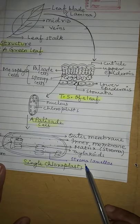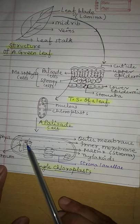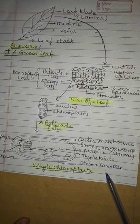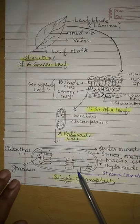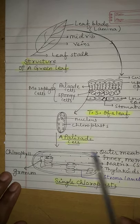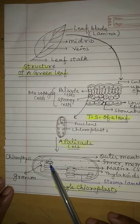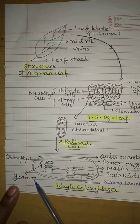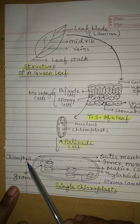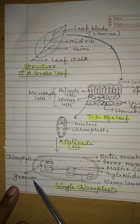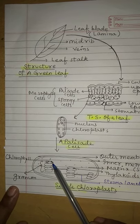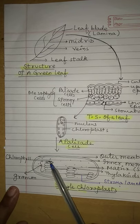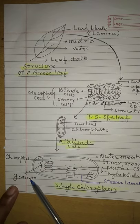Chloroplast was discussed because it is the cell organelle in which chlorophyll pigment is found. The chlorophyll pigment is found specifically in the thylakoids or grana. If asked where chlorophyll pigment is found in the cell, the answer is thylakoid or granum. Chlorophyll pigment absorbs sunlight, so we can say that the actual process of photosynthesis occurs in the grana.